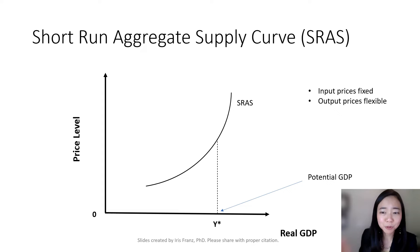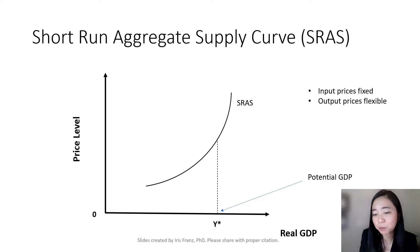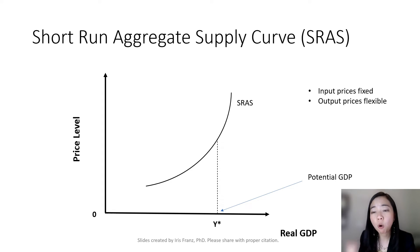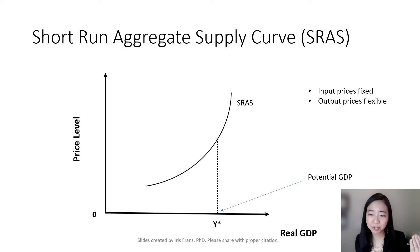And other firms are all doing the same thing. Their input price remains the same, but output price increases. So they're all trying to supply more. And as such, the higher the price level, the higher the real GDP.